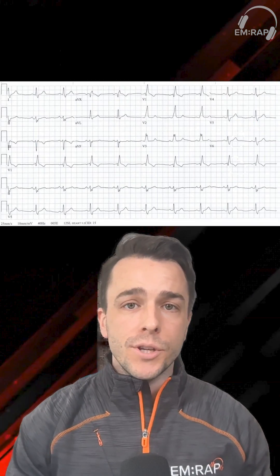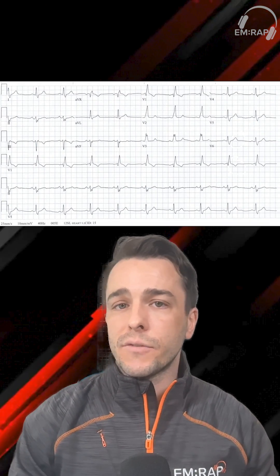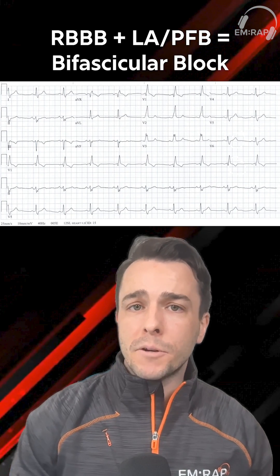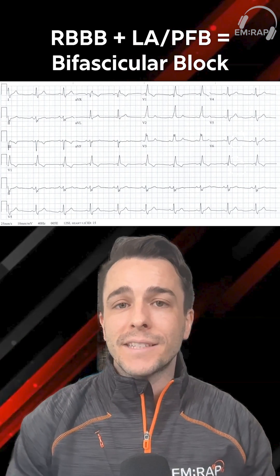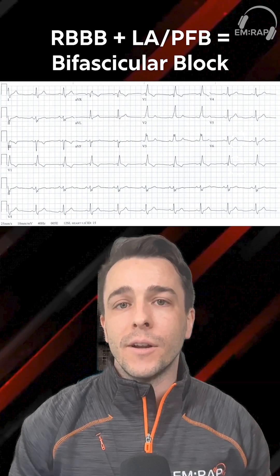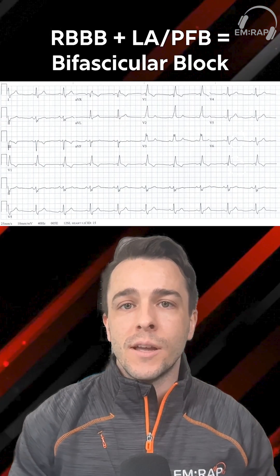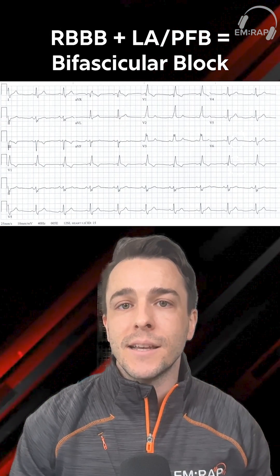If you have a left posterior fascicular block or a left anterior fascicular block combined with a right bundle branch block — remember, a prolonged QRS, the RSR prime in V1, V2, or V3, and a slurred S wave in V1 or V6 — then we can diagnose this as a bifascicular block. That means the right bundle branch is out and one of the fascicles of the left bundle branch is out, so the patient is about one infarct away from going into complete heart block. These are really important to find on our ECGs, as these patients have ischemic cardiac disease at baseline.